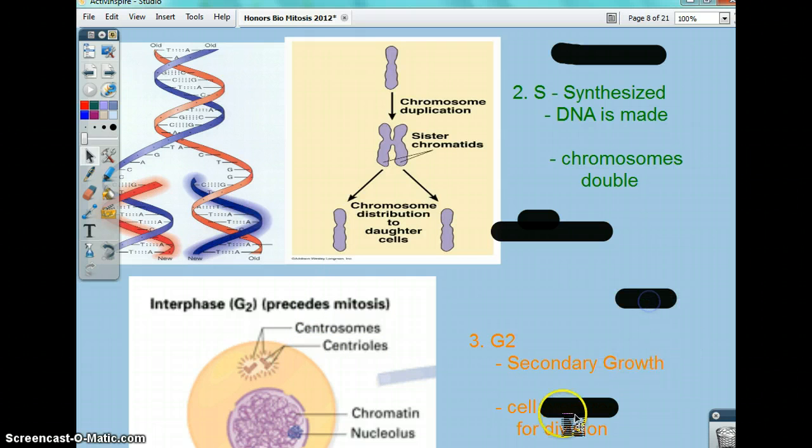G2 is secondary growth. This is where the cell is actually preparing to divide. You have to know each part of the cell during division.